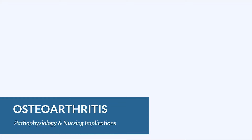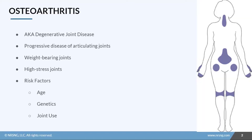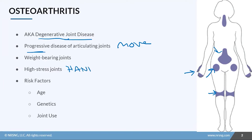Let's talk about osteoarthritis. Osteoarthritis is also known as a degenerative joint disease. It is a progressive disease of articulating joints, which means any joints that move. It's most common in weight-bearing joints like the hips, the back, the knees, and in high-stress joints or ones that are used frequently like the hands and the feet. We especially see this in the hands.